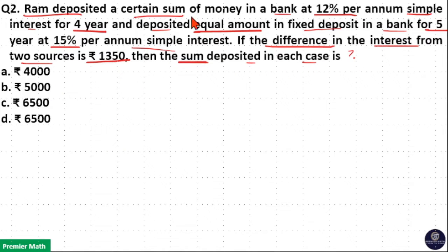He deposited equal amounts in two different banks. In one bank, at a rate of 12% for 4 years, he will receive 12 × 4 = 48% interest after 4 years.